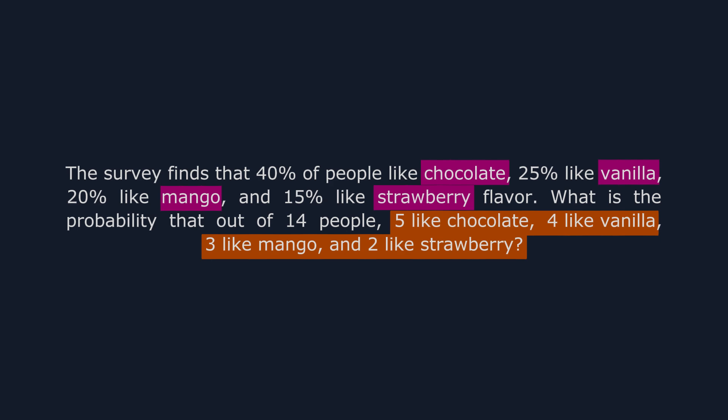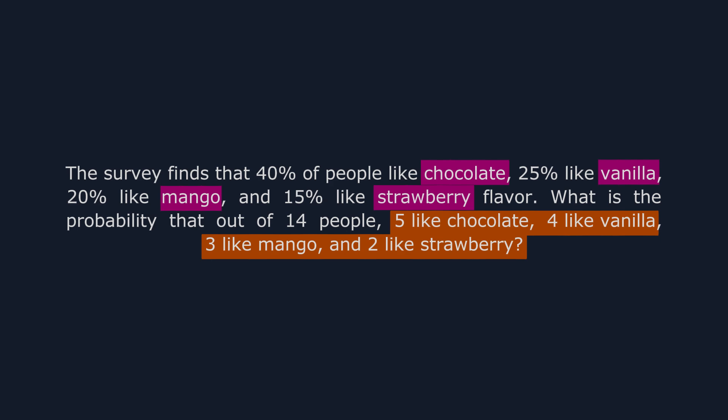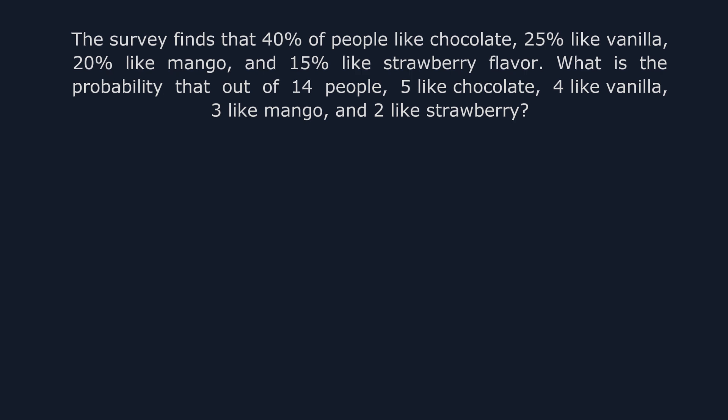Let's break down the problem and solve it step by step. In our problem, the total number of trials, n, is 14, since we're surveying 14 people. The number of people who like chocolate, denoted as x1, is 5. The number of people who like vanilla, x2, is 4.